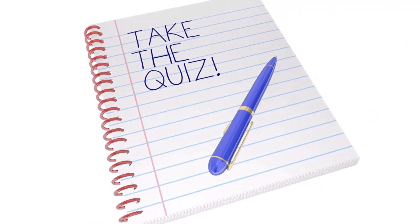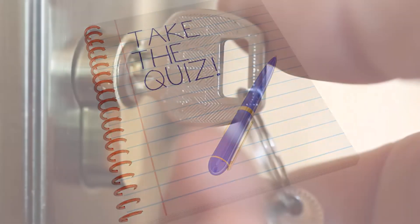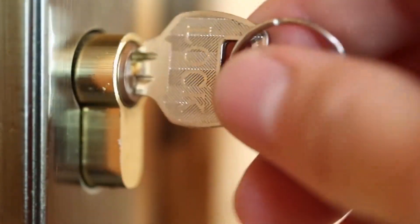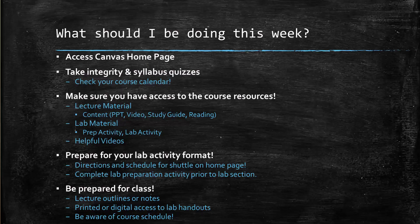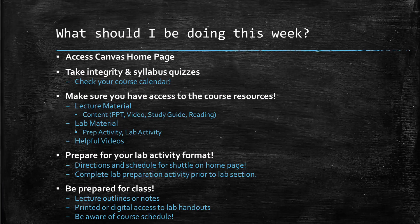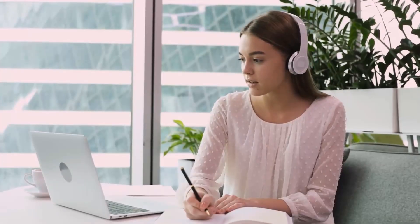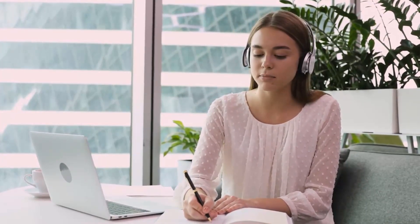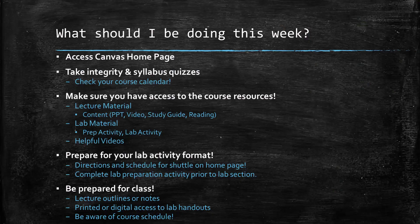Once the quizzes have been completed, Blackboard will automatically unlock your lecture and lab material. In lecture material, you're going to see things like PowerPoint files, MP3 files, videos for lecture, study guides, and reading — and we'll go through each of those. On lab material, you're going to have a prep activity and a lab activity that we'll need to get done each week, and you'll have helpful videos scattered throughout the different modules as we move through the semester.